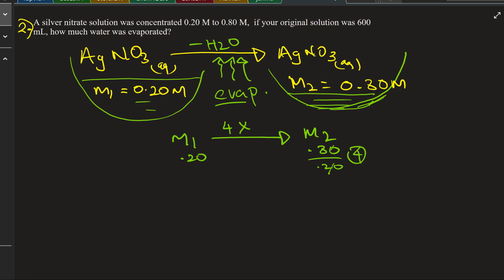The molarity is increased but water is evaporated, so the amount of volume should be decreased. How do we get that? The mathematical process: if you multiply from A to B, then the other transition would be divided.